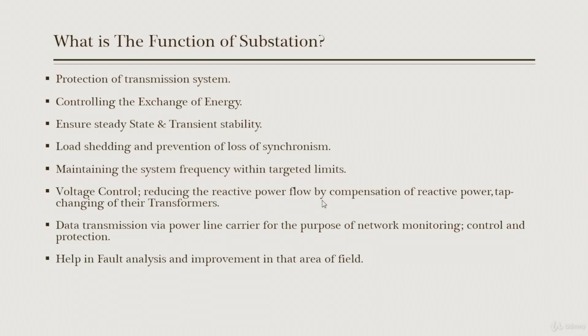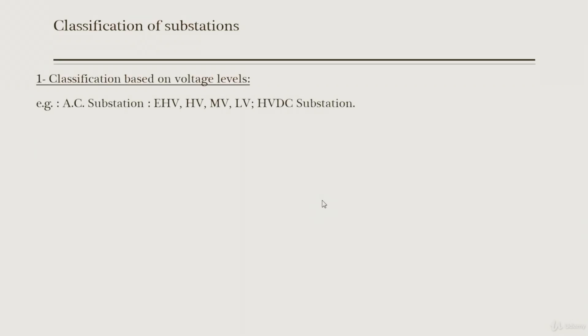Those are the functions of substations. Now let's discuss the classifications. The first classification is based on voltage levels. We have AC substations — alternating current substations — of different types: extra high voltage, high voltage, medium voltage, low voltage substations, and high voltage DC substations.